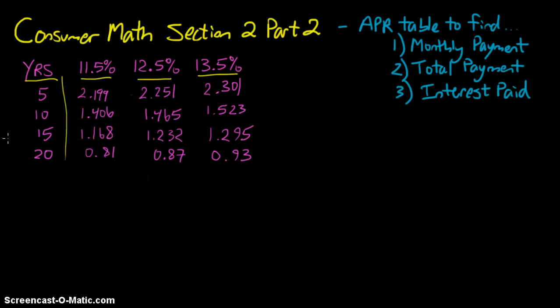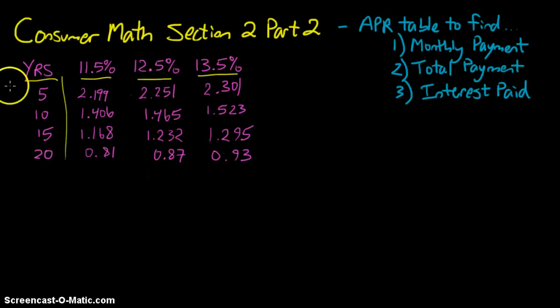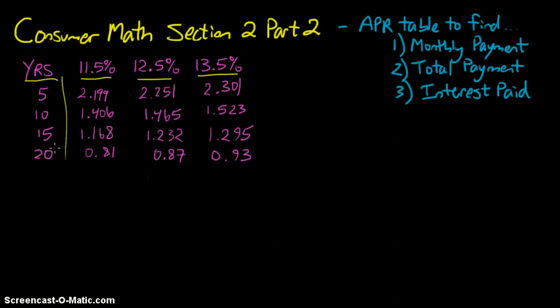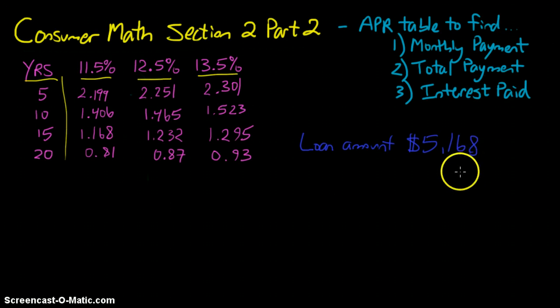So here's the first example problem that we're going to take a look at. We're going to first focus on our first step here, which is finding the monthly payment. You can see we have our APR table here written in. Again, these examples are directly out of the textbook, so if you've read that, you should see some familiarity with these questions that are being asked. So on this first one, we have a situation where they're taking out a loan amount of $5,168. So that's always important to know: what's the total amount that's being financed. This is the amount of money that is being taken out or that is being owed.